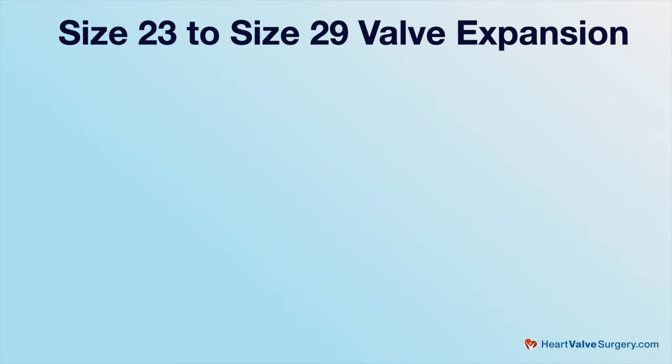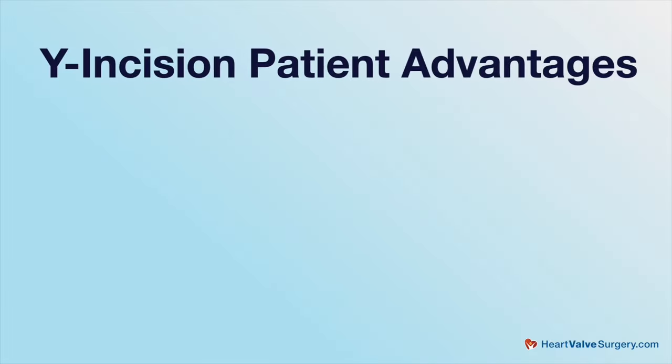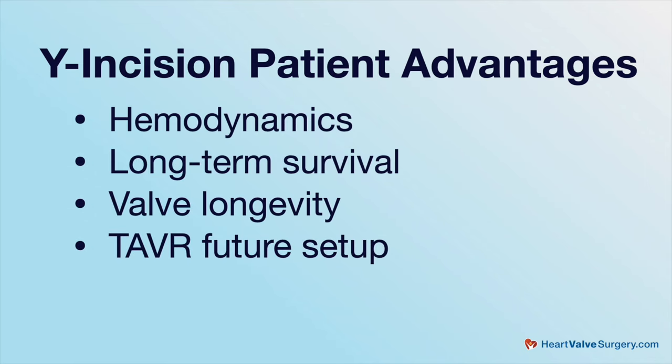Instead, we can say a patient has a 23 annulus, we do the enlargement, we give the patient a 29 valve, which has an opening of about 23–24, matching the patient's native annulus. We basically turn the biological clock back to when the patient had a normal aortic valve, and restore the normal anatomy of the aortic opening. That gives the best hemodynamic outcome, best long-term survival, and also improves the longevity of the valve and sets up future valve-in-valve TAVR.